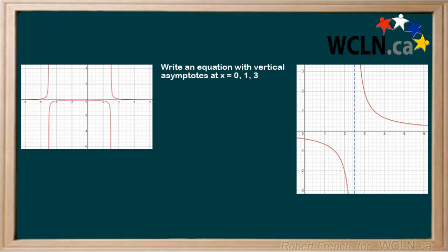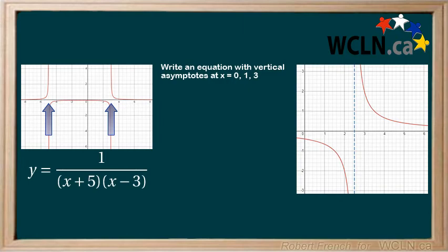Let's take a look. For the first example, we see an asymptote at x equals negative 5 and x equals 3. This will give us two factors in the denominator: x plus 5 and x minus 3.